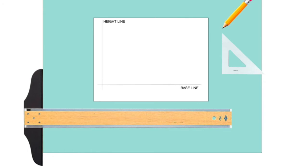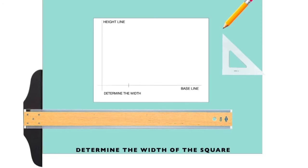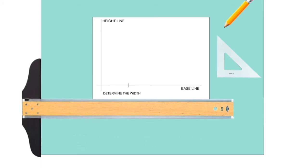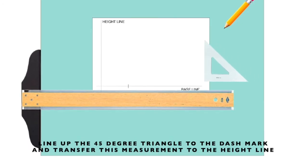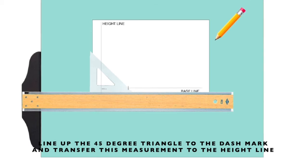Now we'll determine the width of the square that we're drawing, and we'll indicate this by putting a dash mark on the baseline. Now, we'll line up the 45-degree angle triangle to that dash mark, and transfer this measurement to the height line by drawing a 45-degree angle line until it crosses the vertical line.